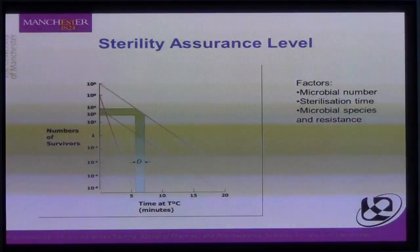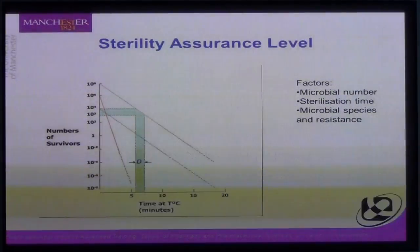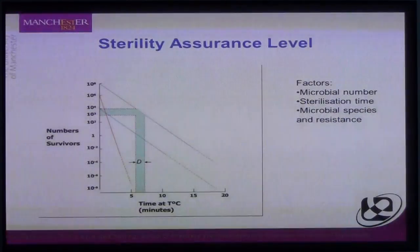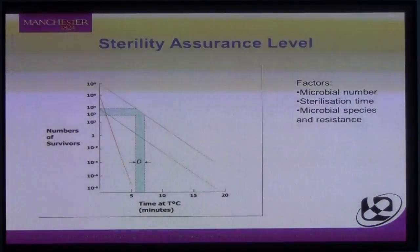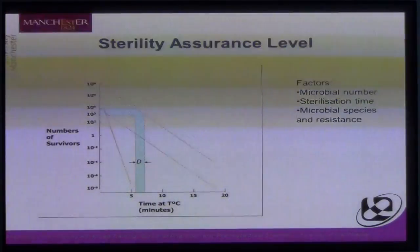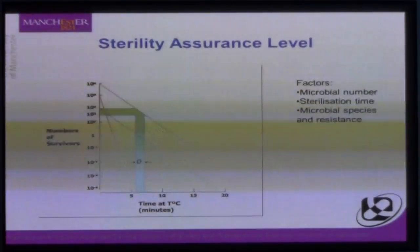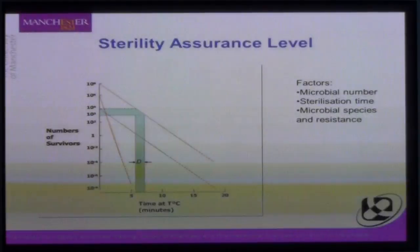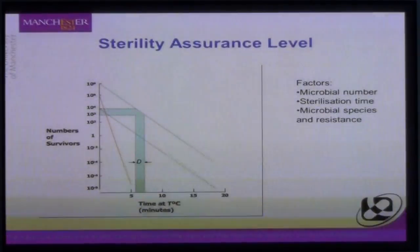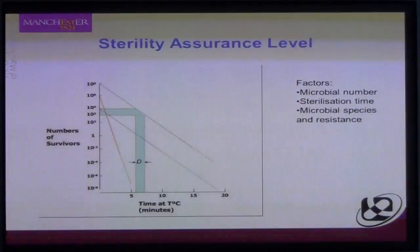From the graph on screen, you can see the different factors that affect the sterility assurance level. On the x-axis are the number of survivors after a sterilisation process, and on the y-axis is the time taken to achieve the desired level of sterility. Factors that influence this include the number of microorganisms — the more there are, the longer it takes — and the microbial species and its resistance, as some microorganisms are killed faster while others are more resistant. There is a copy of the chart in the course notes.